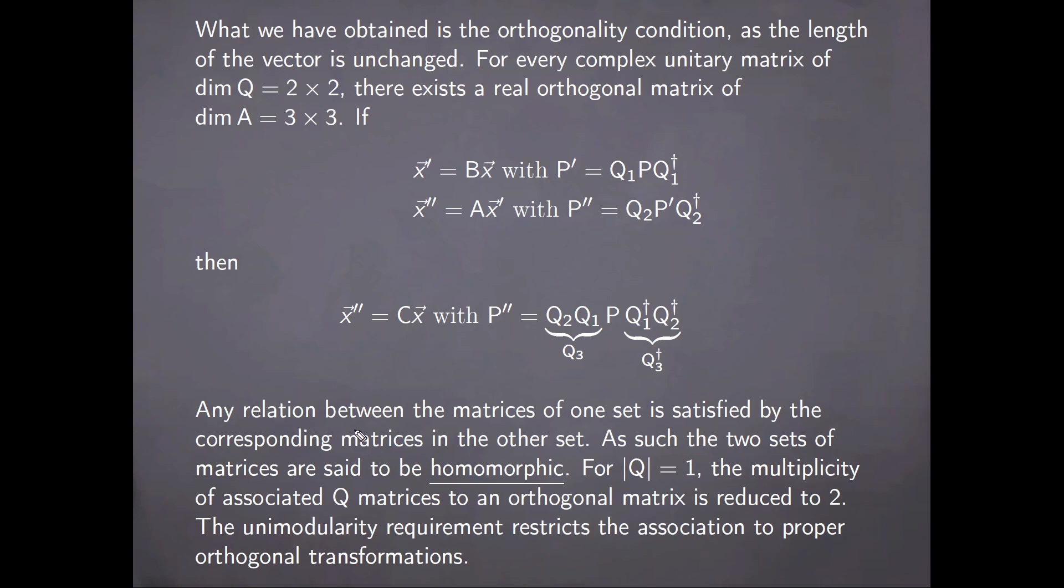So any relation between the matrices of one set is satisfied by the corresponding matrices in the other set. As such, the two sets of matrices are said to be homomorphic. If the determinant of Q is equal with 1, the multiplicity of associated Q matrices to an orthogonal matrix is reduced to 2. Furthermore, the unimodularity requirement restricts the association to proper orthogonal transformations.